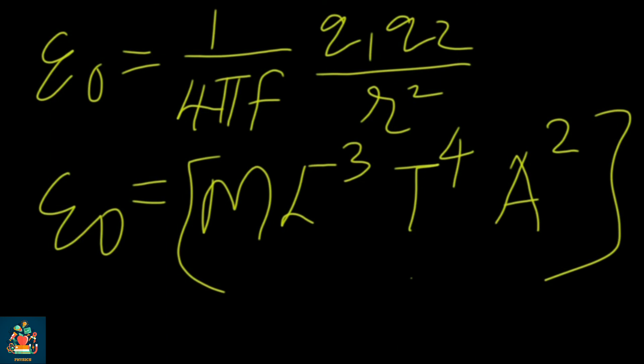So that's why I explained all these things — the unit, the value determined, and the dimensional formula of epsilon zero. And more importantly, what do you mean by epsilon zero — the permittivity of free space. I hope this session was very much helpful. Thank you.